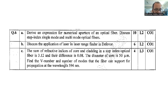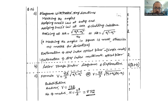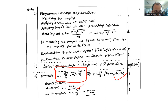Question number 6c is a numerical example. The sum of refractive indices of core and cladding in a step-index optical fiber is 3.12, and the difference is 0.08. The diameter of the core is 50 micrometers. Find the V number and the number of modes the fiber can support for propagation at wavelength λ = 594 nm. The V number formula is V = (πD/λ) × √(n1² − n2²). The answer is V = 132, and the number of modes N = V²/2 = 8712.